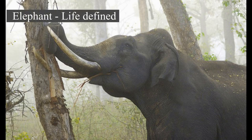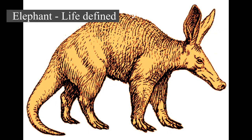Elephant life defined. Elephants are the largest existing land animals. Three living species are currently recognized: the African bush elephant, the African forest elephant, and the Asian elephant. They are the only surviving members of the family Elephantidae and the order Proboscidea.